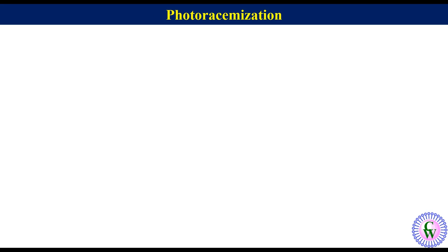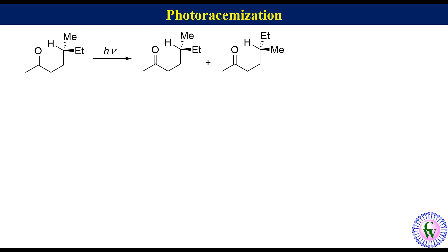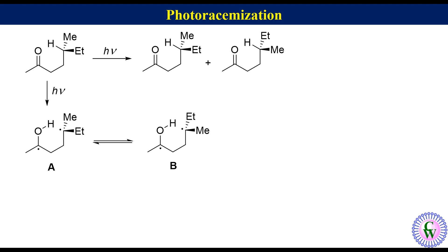The third possibility for the 1,4-diradical is abstraction of the OH hydrogen by the radical carbon at the gamma position and formation of a pi bond between carbon and oxygen. This leads to starting material or a racemic mixture at the gamma carbon if it is chiral. For example, an enantiomerically pure ketone with a chiral center at gamma carbon upon irradiation gives a racemic mixture, because the 1,4-diradical A equilibrates to diradical B with opposite configuration at gamma carbon, and hydrogen abstraction from OH in both A and B gives the racemic mixture.